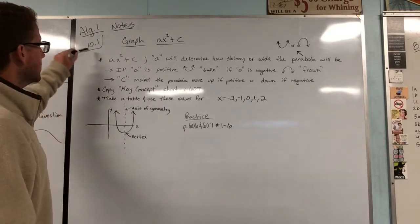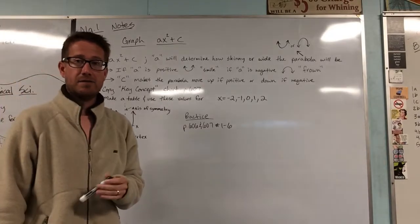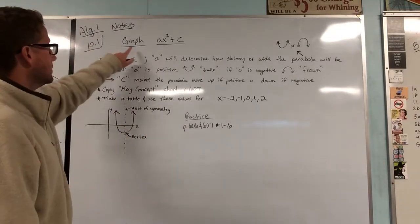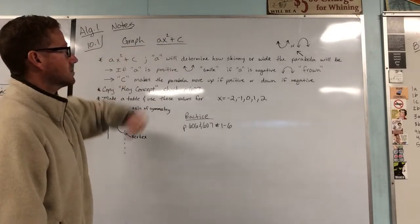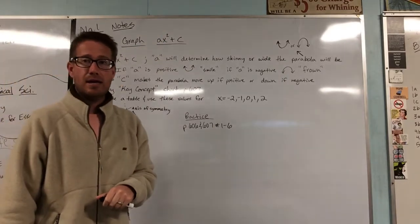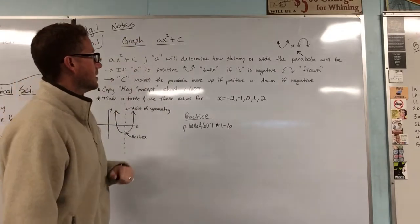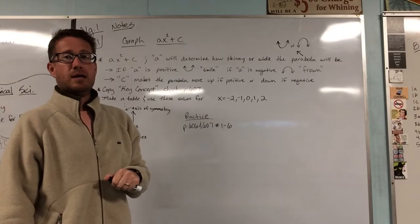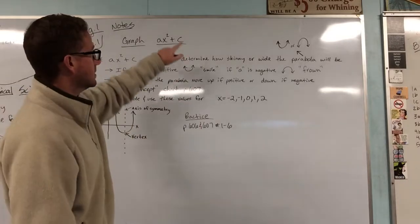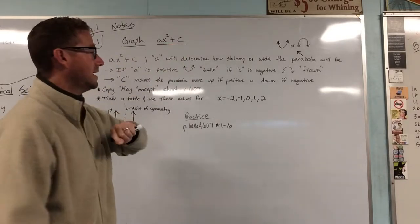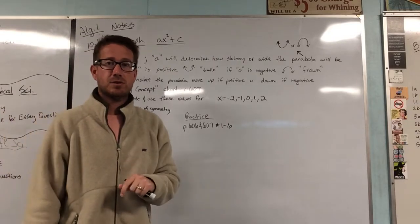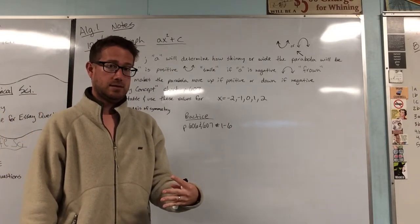So we are starting chapter 10, we have section one titled graph ax squared plus c, and you guys should remember a right there being in front of x squared is going to be a coefficient, and c right over here, it has no variable next to it, so it's going to be a constant.